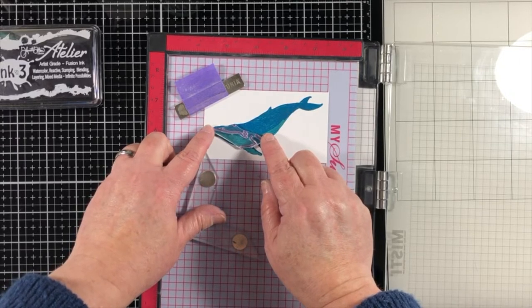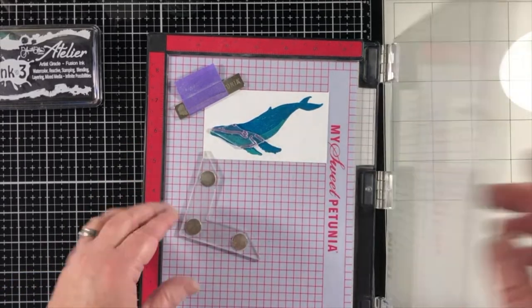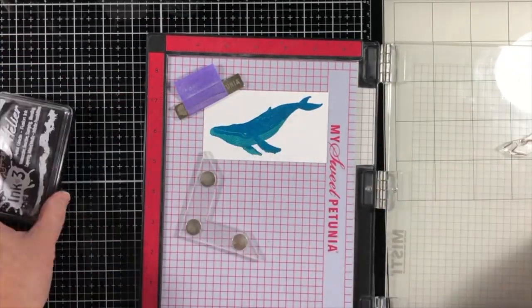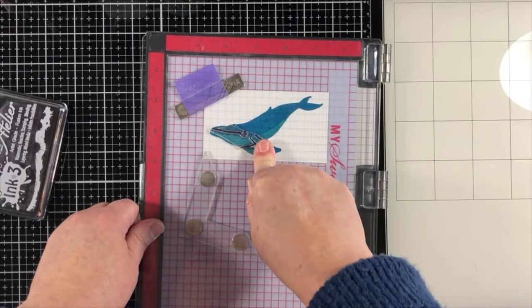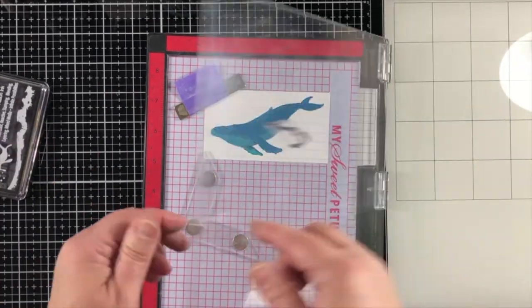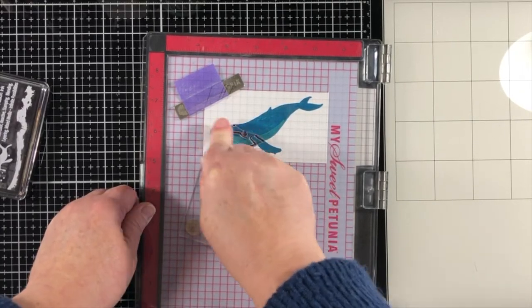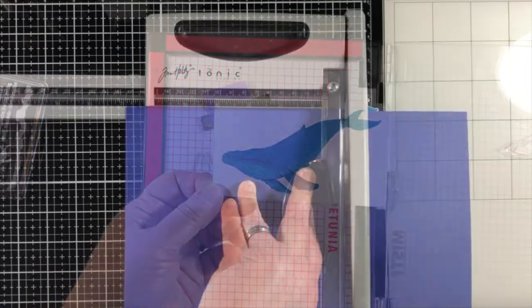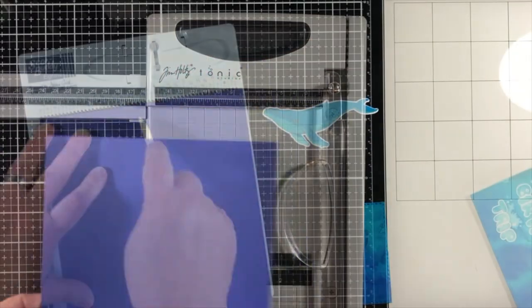And then the third piece of the layering stamp set is the little details of the whales. I guess maybe his front part, his head and fins, but I'm going to do that in black. And that's in the painted black Atelier ink. Now I did it a couple of times to make sure it stays really nice and crisp, dark, and it worked perfectly.